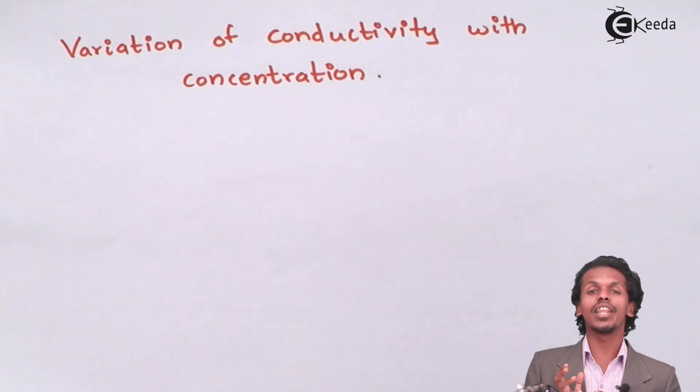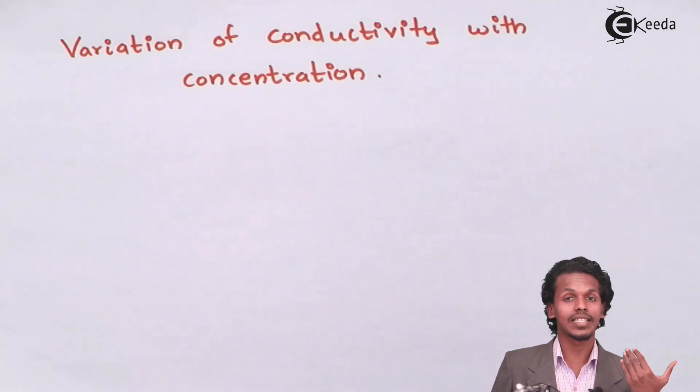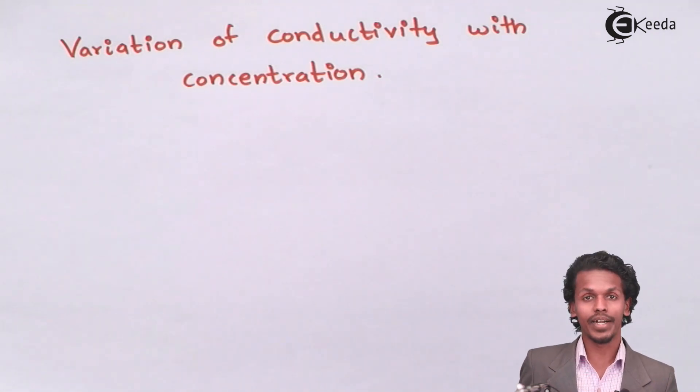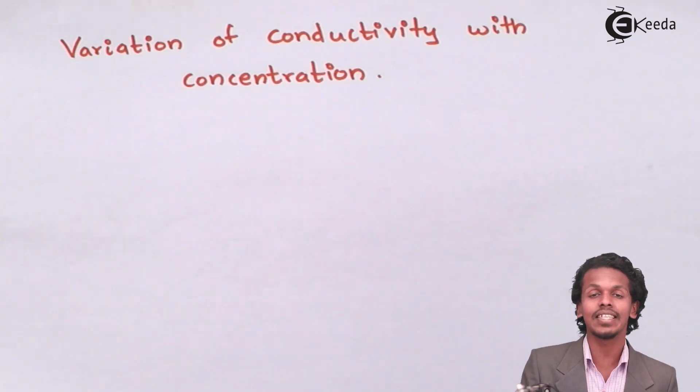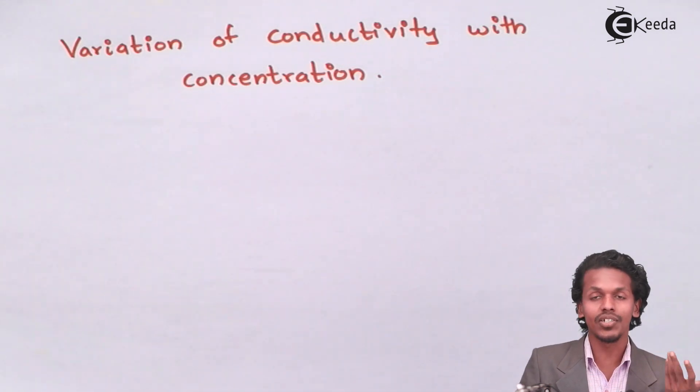And this is the variation that is shown by the conductivity for a strong electrolyte as well as the conductivity for a weak electrolyte. So if we have to increase the conductivity of a particular solution, we have to increase the number of strong electrolytes present in the solution or we have to increase the concentration itself.